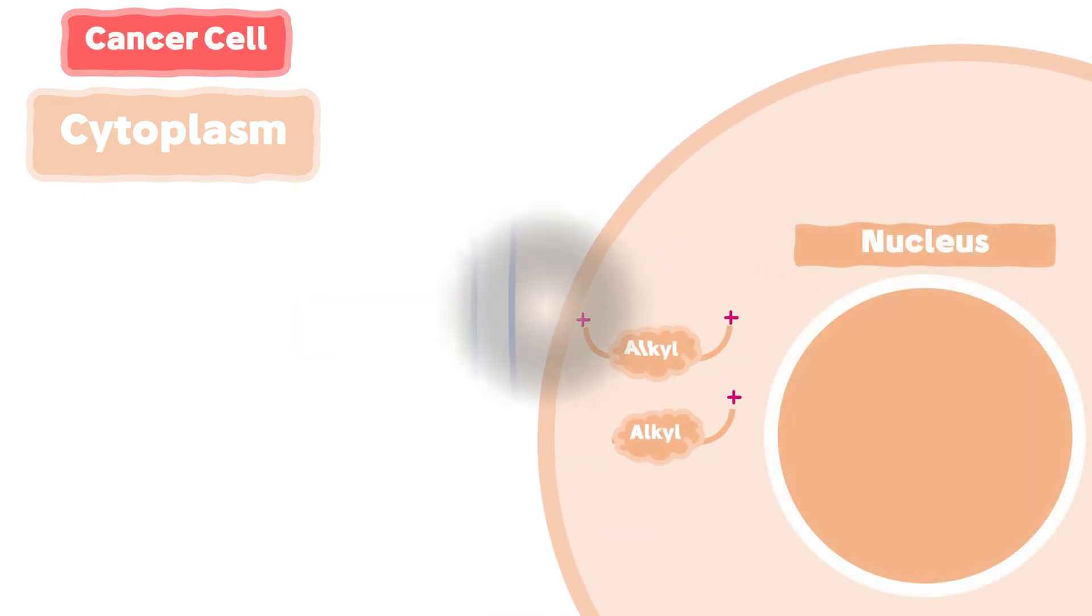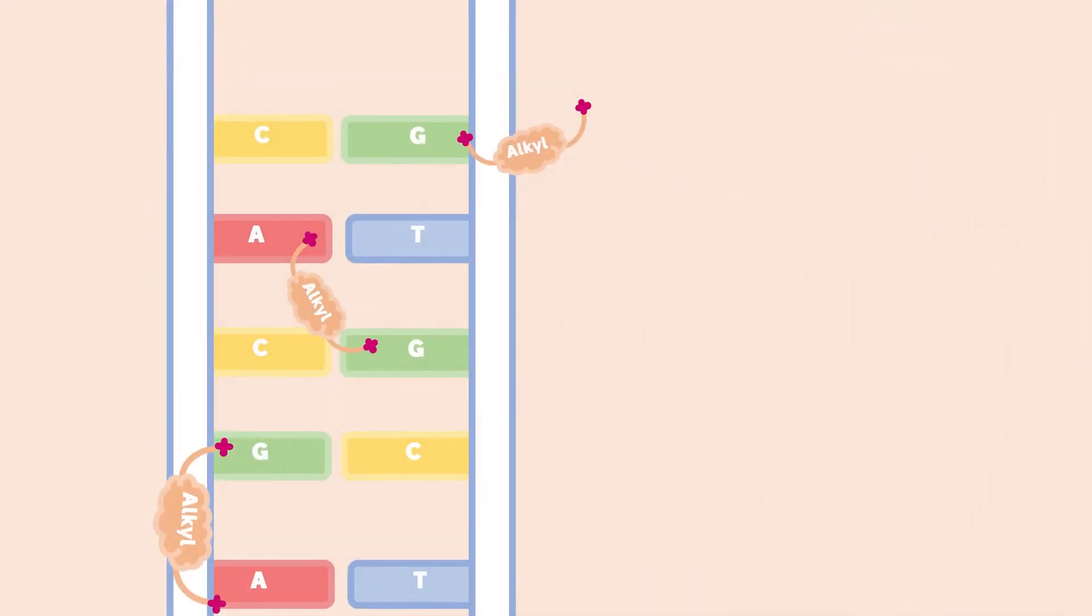In the nucleus, the alkylating compounds bind with the DNA nucleotides, mostly with the guanine and adenine bases, forming a bipartite structure called adduct.